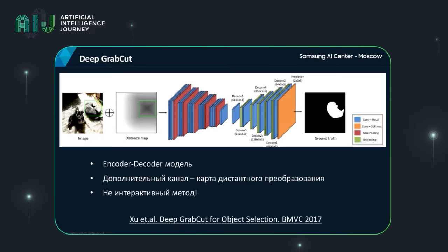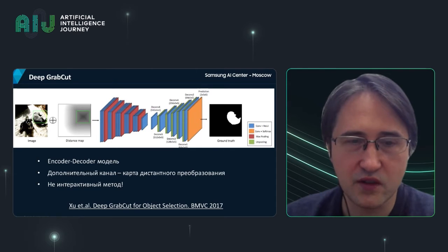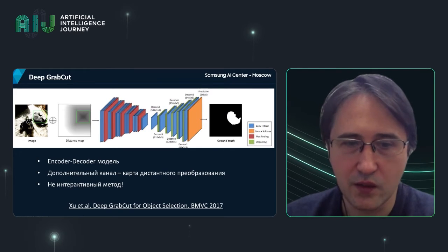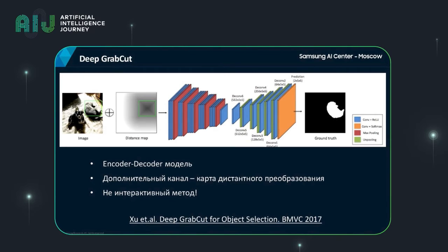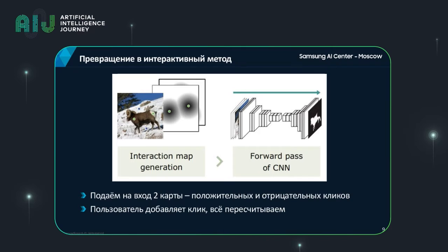One of the most popular methods is Deep GrabCut. The main idea is very simple: we take an encoder-decoder model used for automatic image segmentation and add additional information — specifically a distance transformation map. This map shows the distance to the border, so the model knows which pixels are inside the selection frame and which are outside. However, this method is not interactive — you cannot tell the model to change its output.